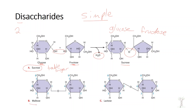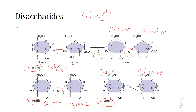The next disaccharide is maltose, which is made of glucose and glucose. The same thing happens — dehydration synthesis, we lose a water molecule, and the two sugars combine. The last one is lactose, where we combine a glucose molecule with a galactose molecule. Again, dehydration synthesis removes a water molecule and forms the bond. So when we put two monosaccharides together we get sucrose, maltose, or lactose.